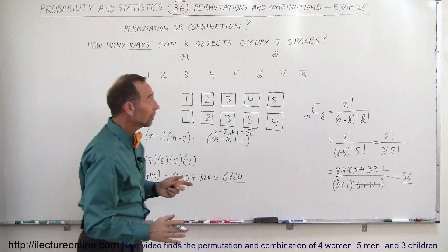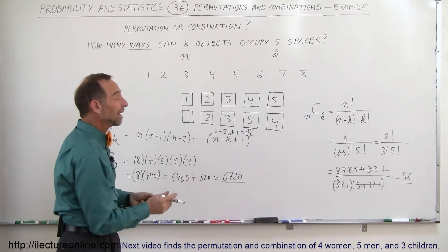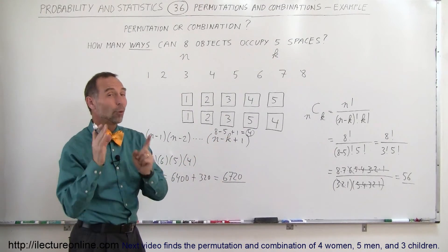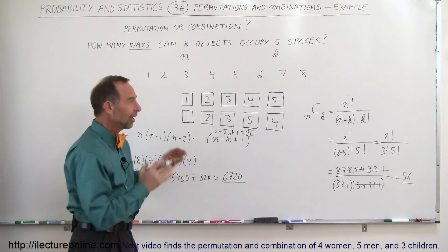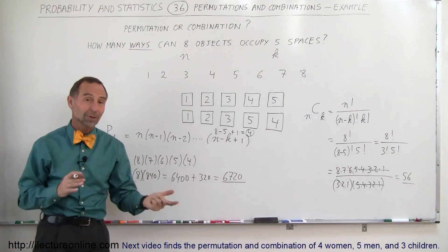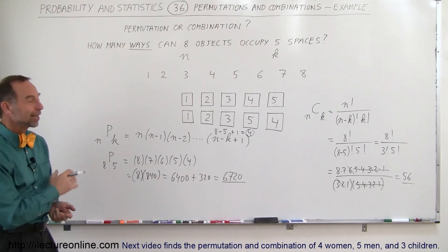So if the order doesn't matter, realize then that you only have 56 combinations. If the order does matter, you have 6,720 permutations. And that's how you know the difference between permutations and combinations. And that's how we do it.